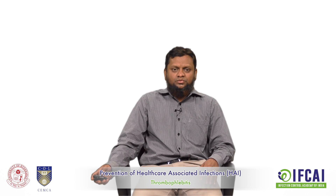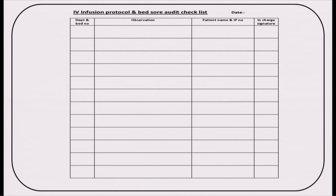Looking at the IV infusion protocol and bed sores audit checklist, you record the date, observations, and patient details including when the patient was admitted. This gives you a brief data set about your IV lines — whether peripheral or central — and also about bed sores in the patients.